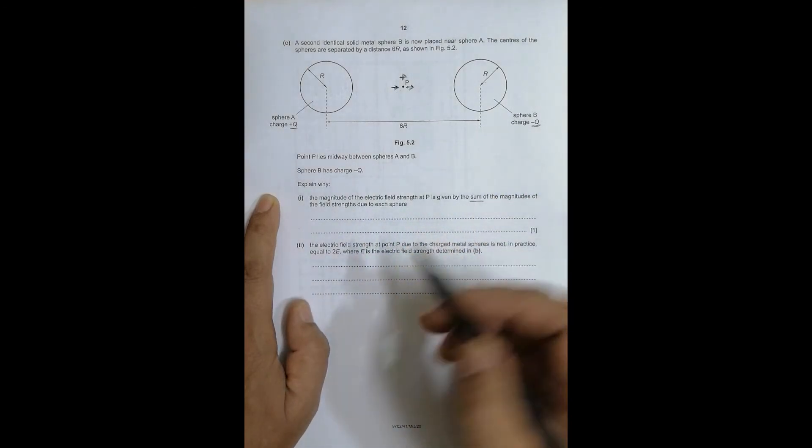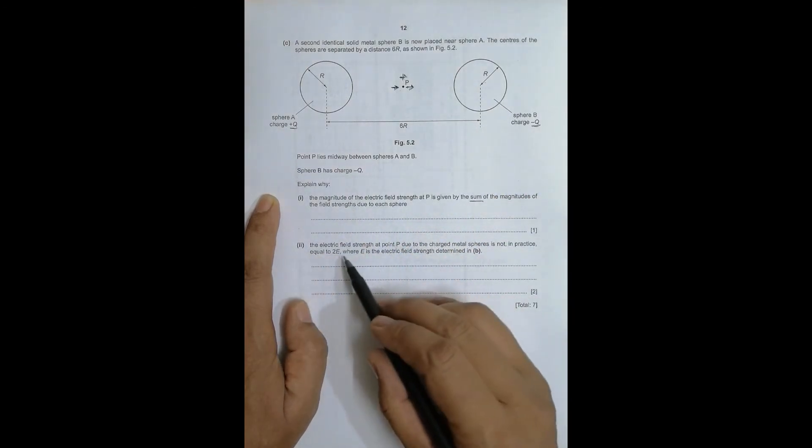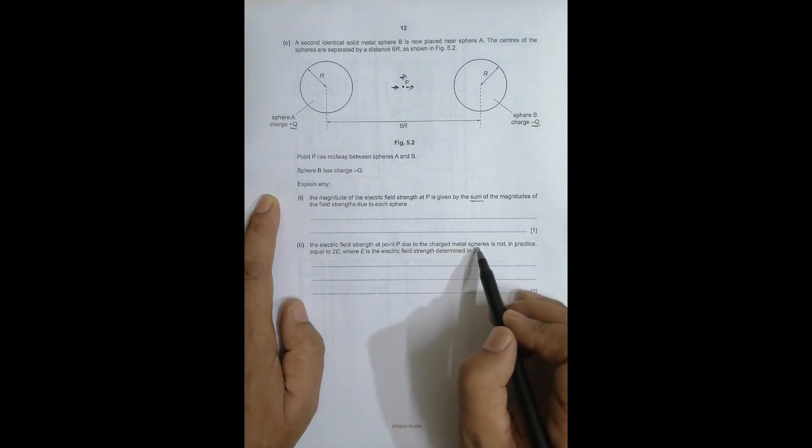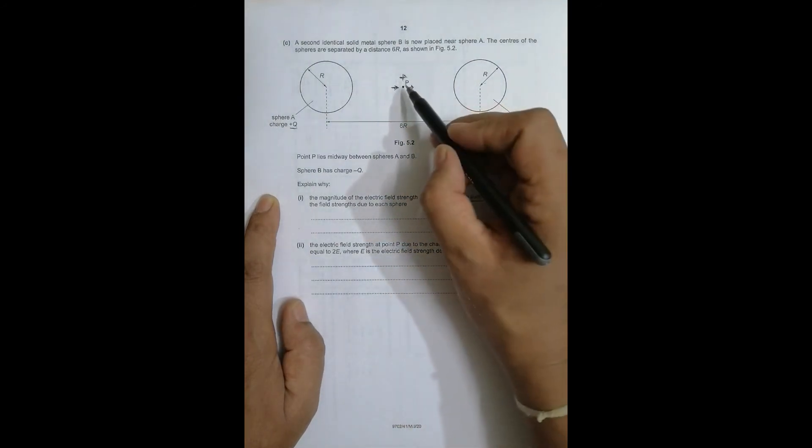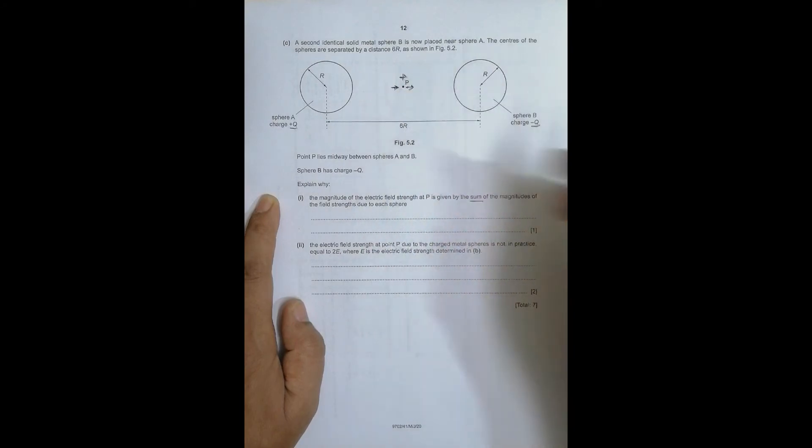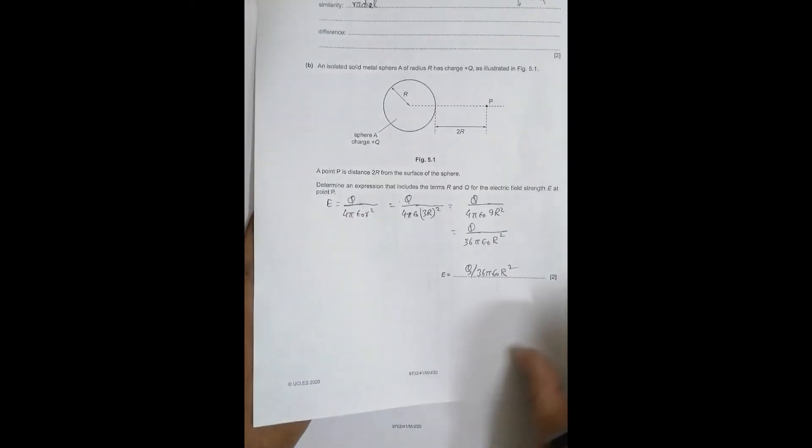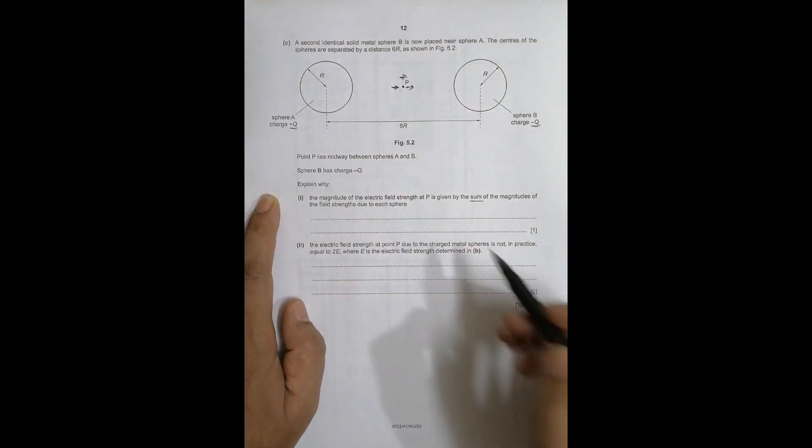The field strength at point P due to both metal spheres is not in practice equal to 2E. It says that the electric field will not be equal to 2E practically.